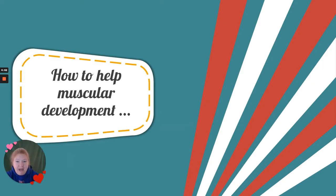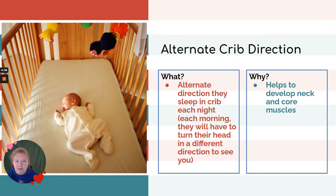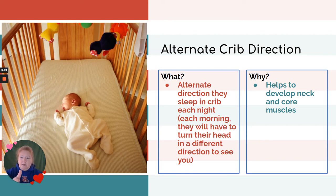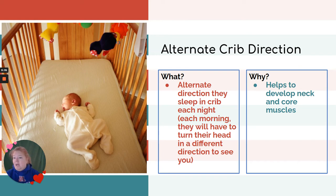So besides that, how can you help muscular development? One way is to alternate crib direction. It means alternate the direction that you put your child in the crib at night, even for naps. Why? Because when you come into the room, they're going to have to turn their head a different way. It helps to develop those neck and core muscles, and it's a really simple thing to do — no extra materials needed.